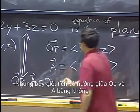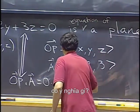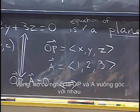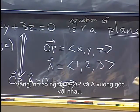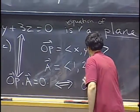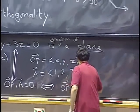But now, what does it mean that the dot product between OP and A is 0? Well, it means that OP and A are perpendicular.